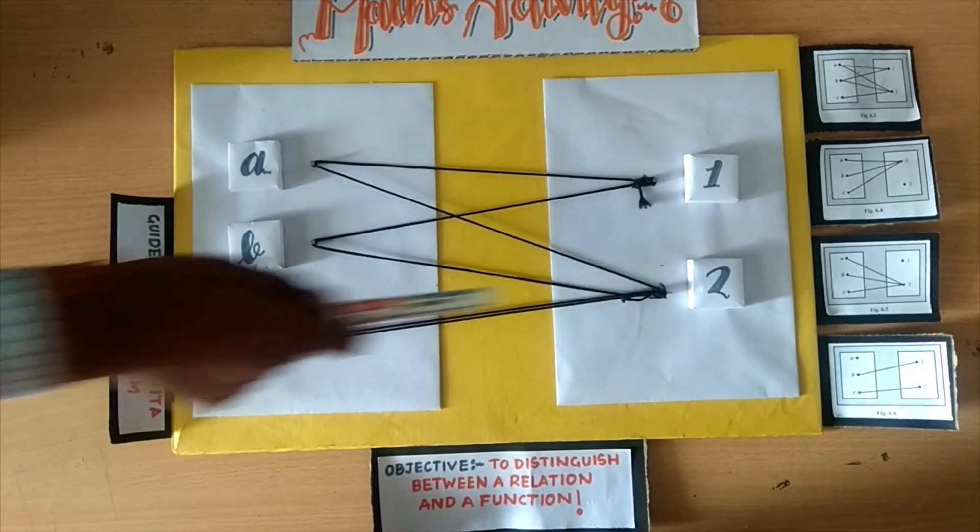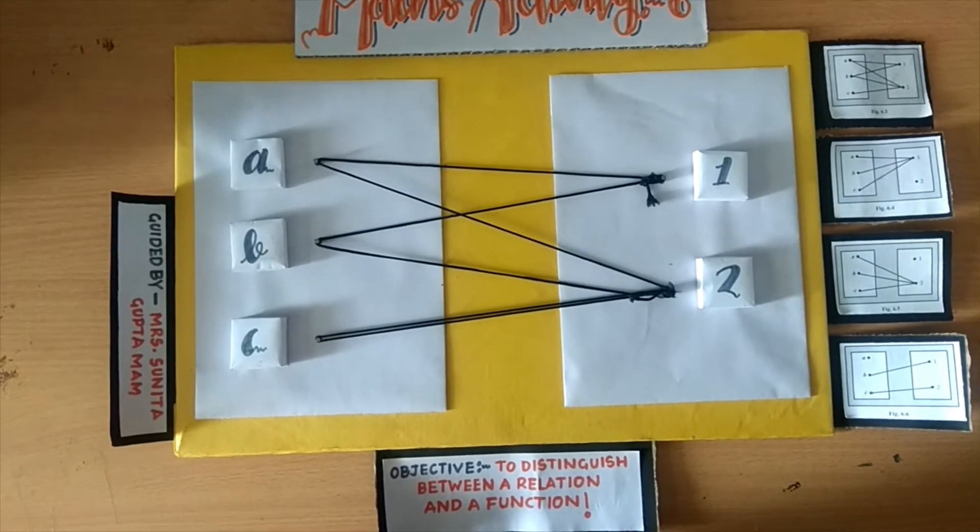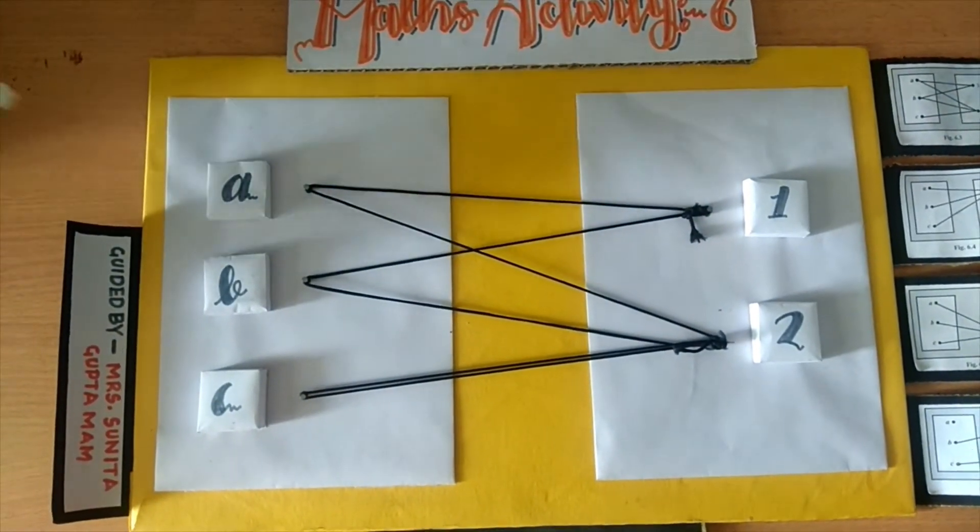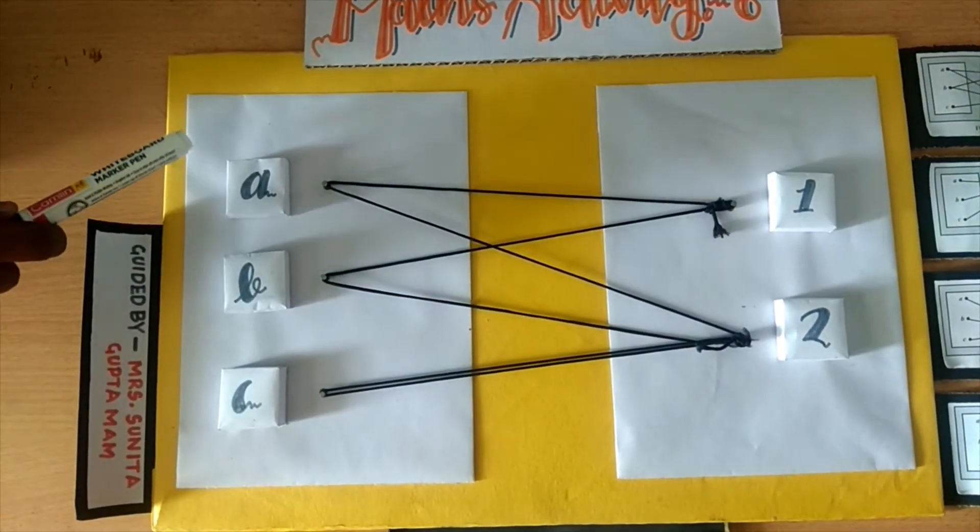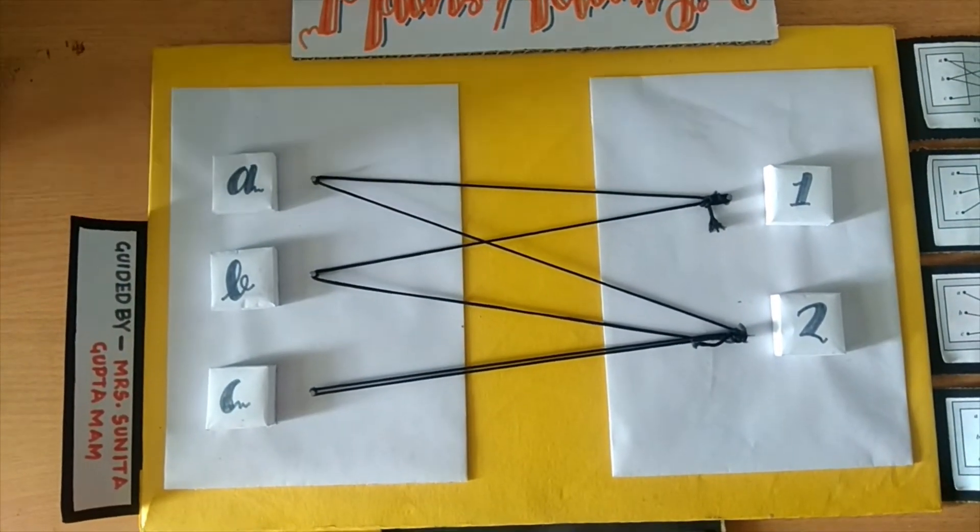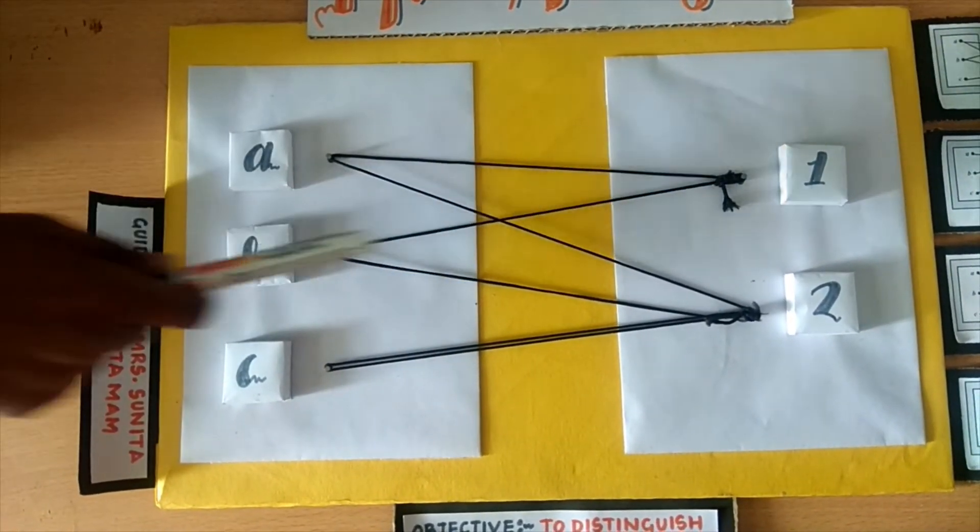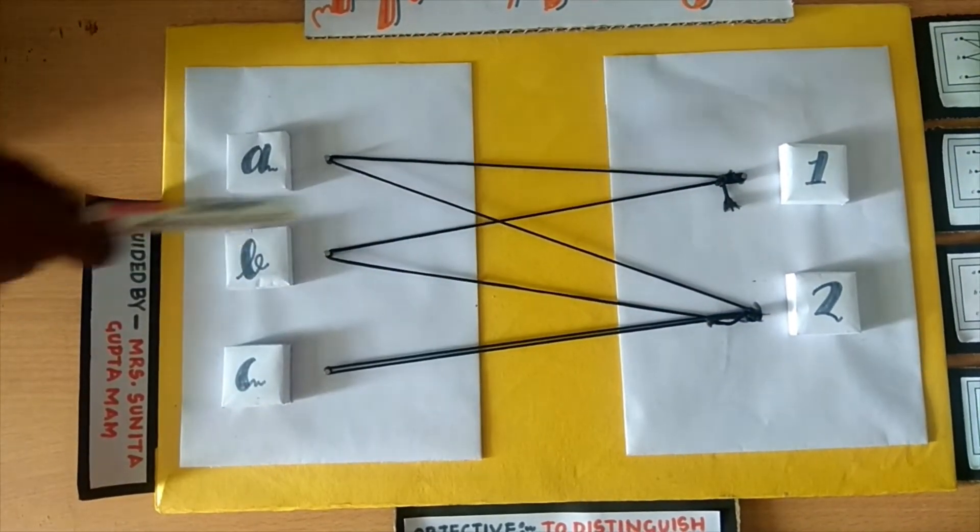C2. These ordered pairs constitute a relation but not a function because in ordered pairs A1 and A2, the first element is the same. One element is mapped to two elements, same as for B1 and B2. B has two images, 1 and 2. So it is a relation.